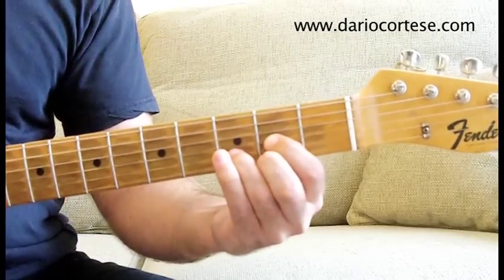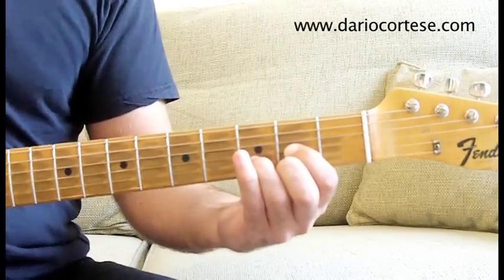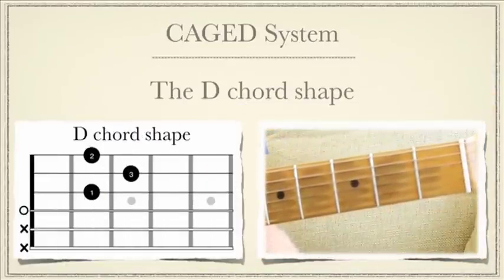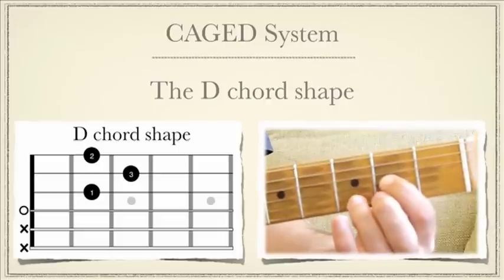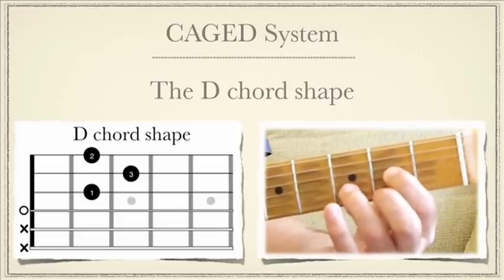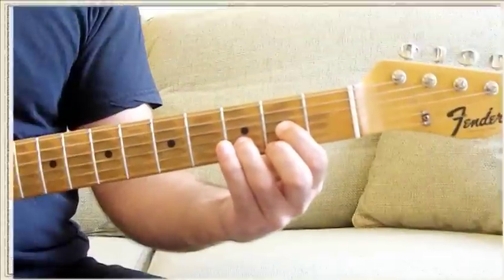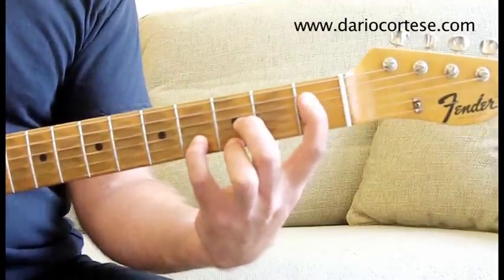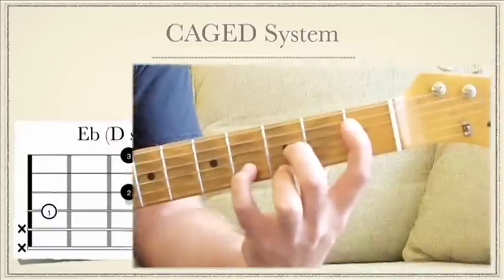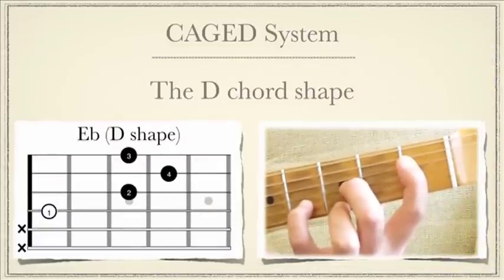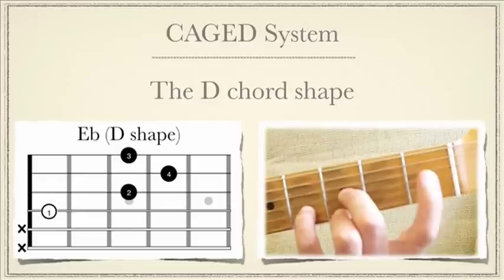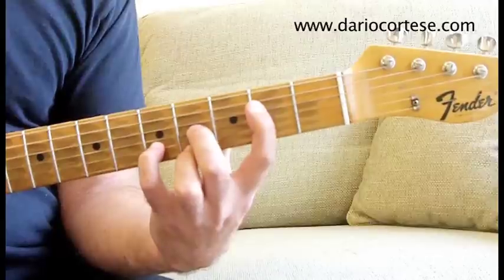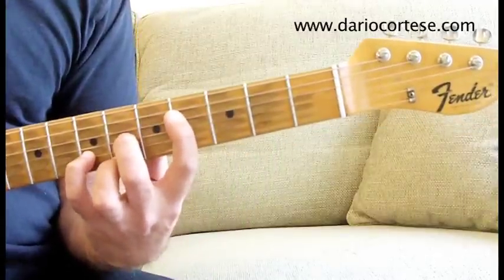Let's play a D chord. I'm not playing the bottom two strings. Starting from the open D string, then second on the G, third on the B, second on the top E string. We need to change the fingerings — second, third and fourth fingers. Move it up one fret and add the index. We're now playing an E flat chord using the D shape. The root of the D shape is on the fourth string — it's the only position that has the root on the fourth string. Move it one more fret up and it will be an E chord, F chord, F sharp, and so on.